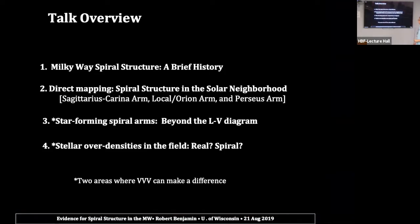I'm going to talk briefly about the history of spiral structure, because I've come to love the history and I think it's fun to know where we came from. I'll talk about direct mapping of spiral structure in the solar neighborhood, then talk about star-forming spiral arms, getting beyond the classic diagram used for galactic structure called the LV diagram, and then finish with a discussion of stellar overdensities in the field.